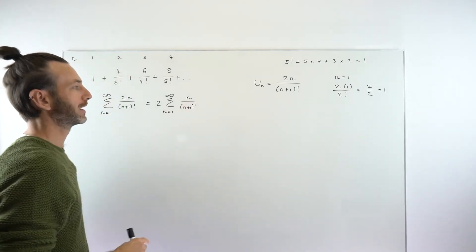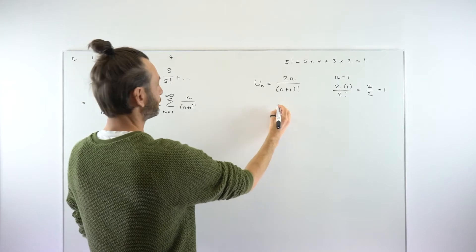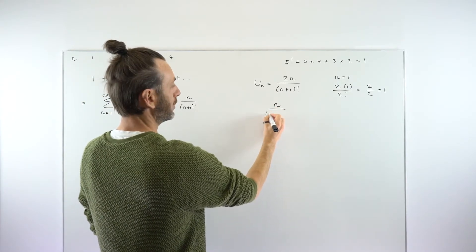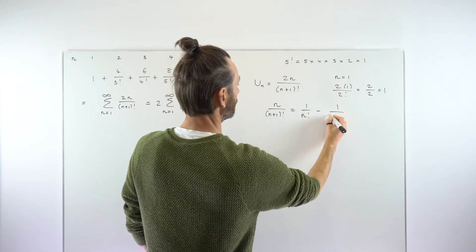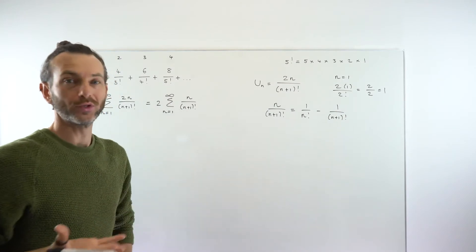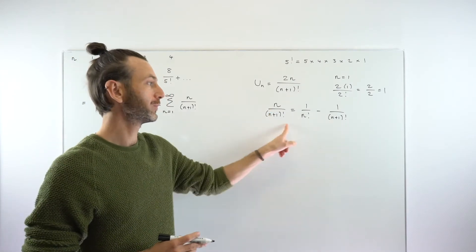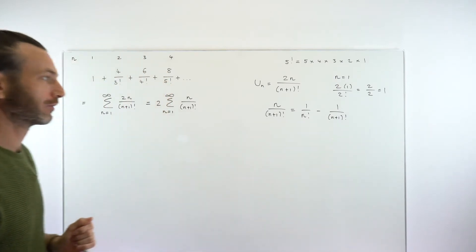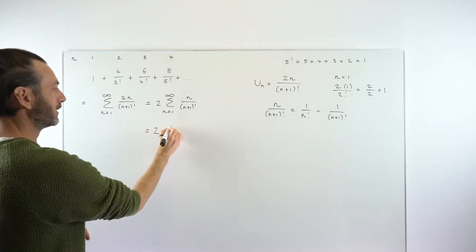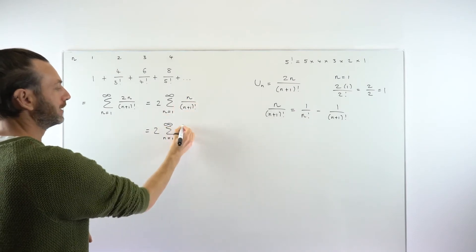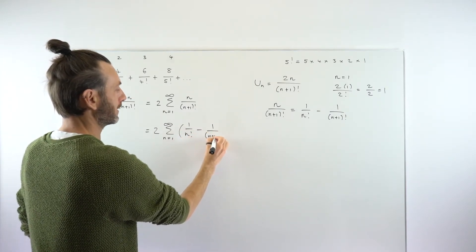Now, what about this n over (n+1)! term? I'm going to pull in a result from factorials: n over (n+1)! is equal to 1/n! minus 1/(n+1)!. You'll just need to trust me on that result — I'm going to link to a video above that shows where it comes from. But what that allows us to do is replace n/(n+1)! in our series with 1/n! minus 1/(n+1)!, giving us 2 times the sum from n=1 to infinity of [1/n! minus 1/(n+1)!].